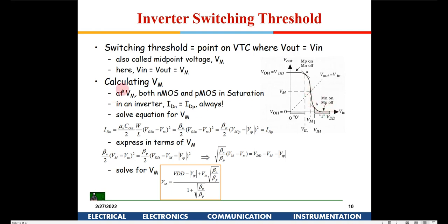To calculate VM, we equate the NMOS and PMOS currents. At that point, the saturation current equation gives: In = βn/2 × (VM − Vtn)² and Ip = βp/2 × (VDD − VM − |Vtp|)². Equating these and rearranging yields the expression for VM.